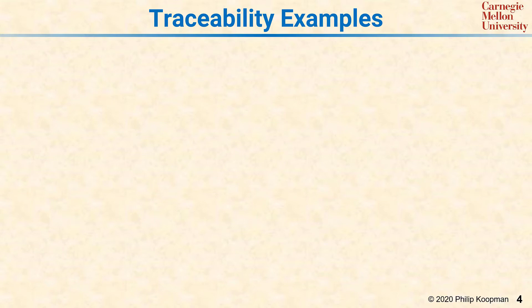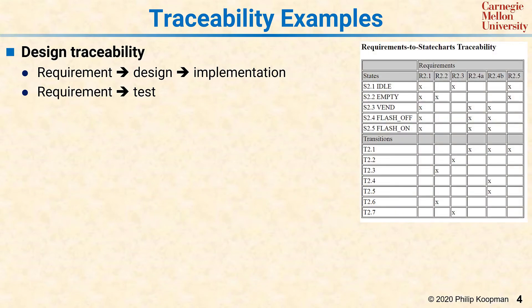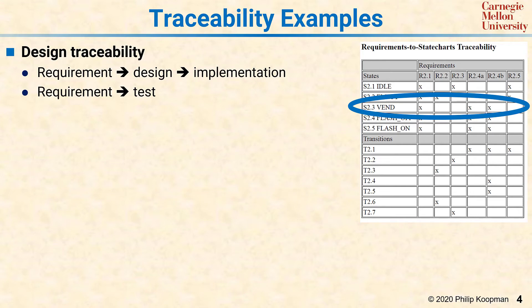Traceability is a very general concept that can be applied across the entire design cycle. The first concrete example is design traceability, which might be a requirement that traces to a design that traces to an implementation, or a requirement that traces to a test. Here's an example figure showing a requirements-to-state-chart traceability spreadsheet. The various rows are different states and transitions within a state chart, and the columns are different requirements. An X marks where a particular state traces to a particular requirement — for example, state 2.3 (vend) traces to requirements 2.1, 2.4a, and 2.4b.